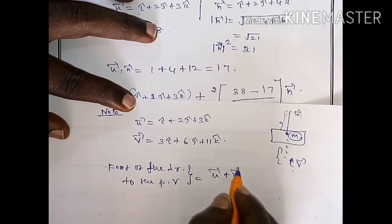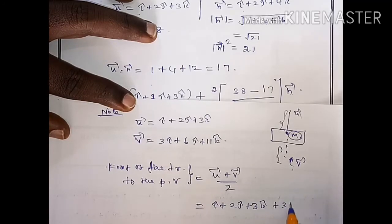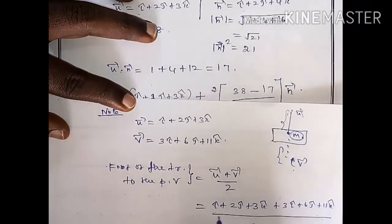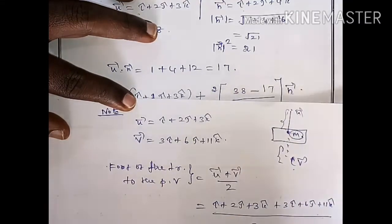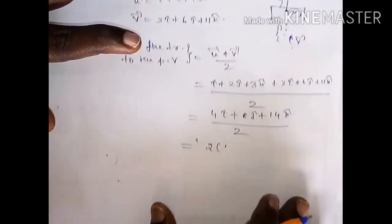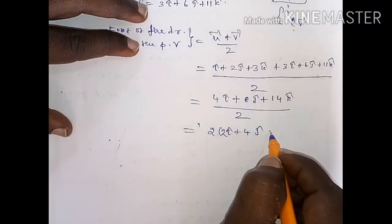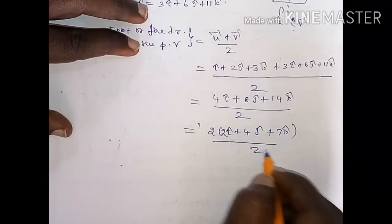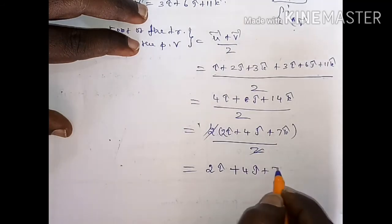Therefore v vector equal to 3i cap plus 6j cap plus 11k cap. This is the image point. The midpoint is u vector plus v vector divided by 2, that is i cap plus 2j cap plus 3k cap plus 3i cap plus 6j cap plus 11k cap divided by 2. Arranging: 4i cap plus 8j cap plus 14k cap divided by 2, giving 2i cap plus 4j cap plus 7k cap.